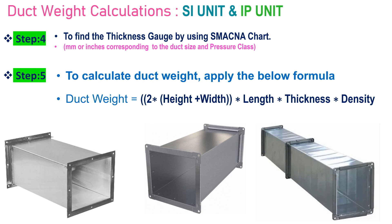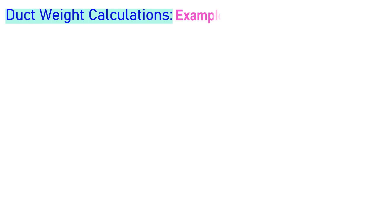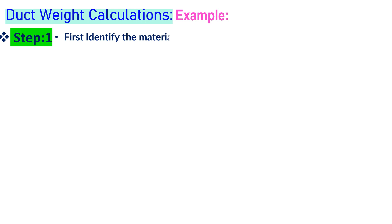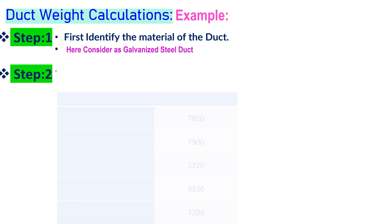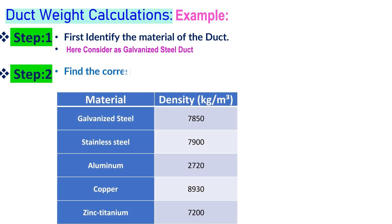Now we go through the step-by-step calculation of duct weight in both imperial units and SI units. Step 1: Identify the material of the duct — here we consider galvanized steel duct. Step 2: Find the corresponding density of the duct material. Galvanized steel equals 7850 kg per cubic meter.